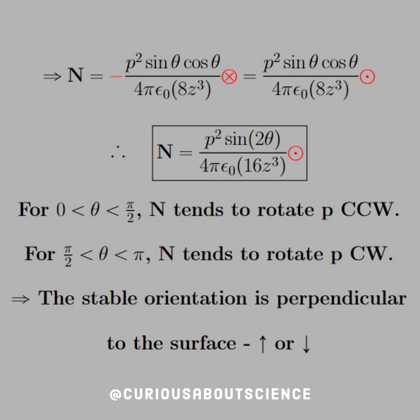Now that we only have one trig function to worry about, we can see what the effects of changing or varying theta is. So for theta between zero and pi over two, the torque tends to rotate the dipole counterclockwise. Meanwhile, if you have theta between pi over two to pi, the torque will tend to rotate the dipole clockwise. Both of these suggest that the stable orientation is perpendicular to the surface, whether that is up or down.